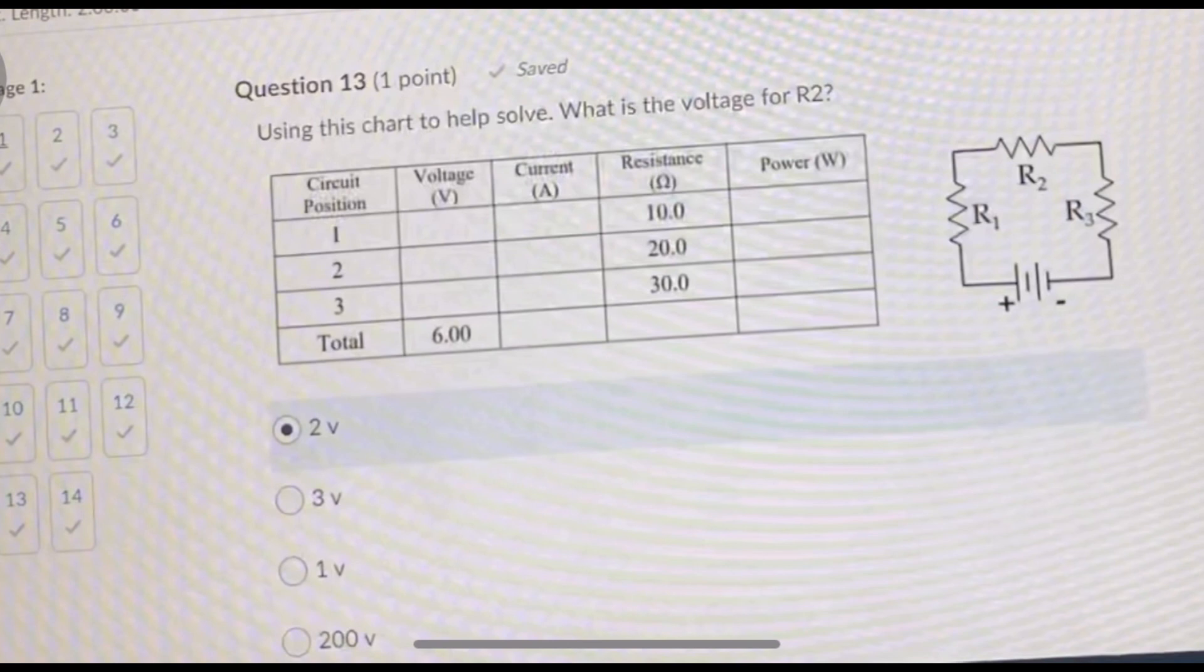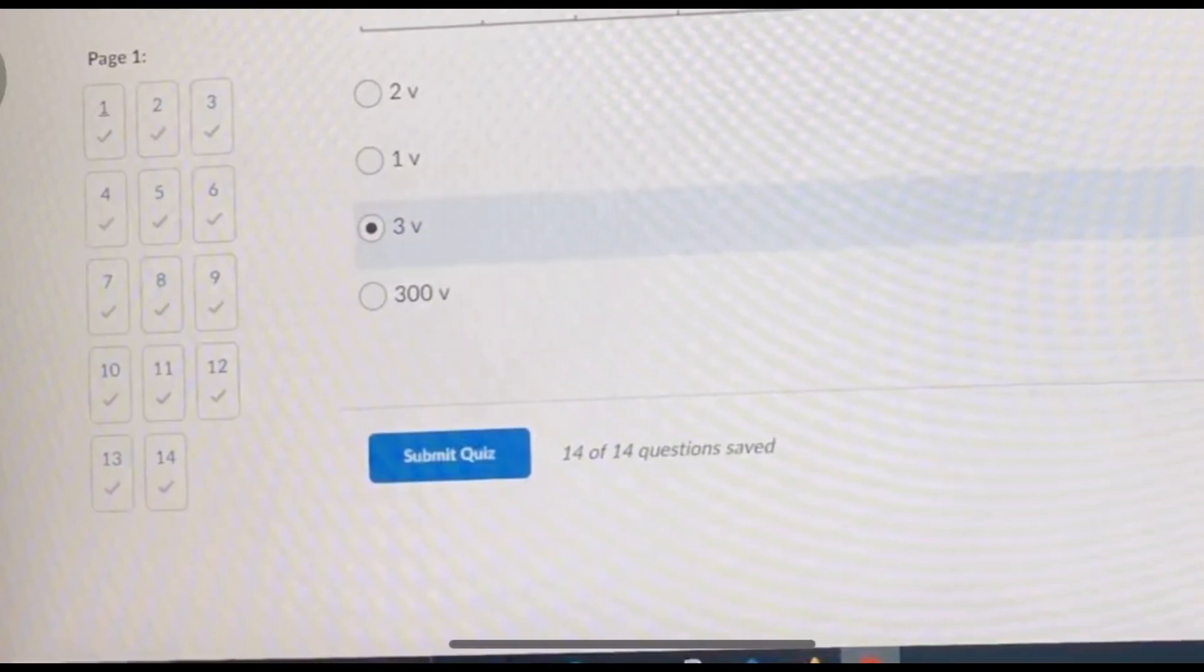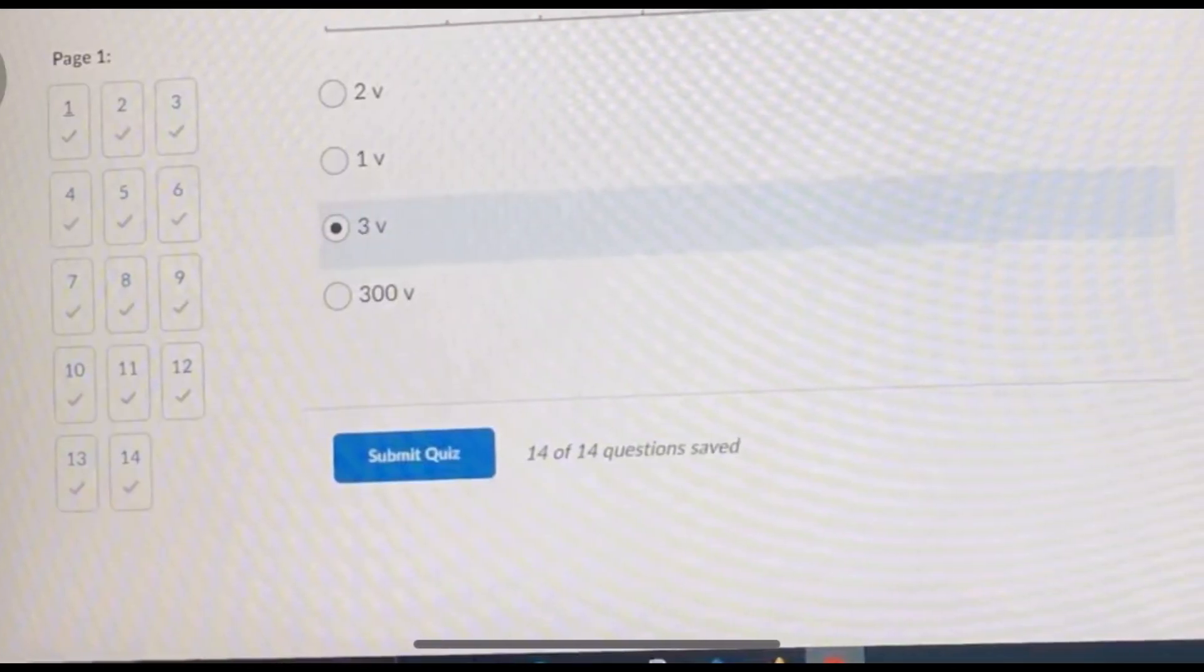Number 13: at position two your voltage is missing, your current is 0.1, and your resistance is 20. 20 times 0.1 is 2 volts. This one is for R3. Again, voltage is missing, current is 0.1, and your resistance is 30. 30 times 0.1 is 3, so your voltage is 3. If you were to add all those together, your total voltage would be 6.